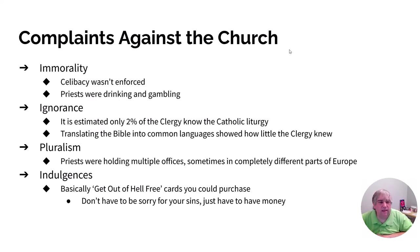What were the biggest complaints against the church? The first is immorality. A Catholic priest is not supposed to live with women, not supposed to have children — supposed to be celibate and chaste. It wasn't happening. There were children of Catholic priests everywhere, and even a couple of popes who had children. Ironically, those popes' children became popes. Priests were drinking and gambling, and instead of doing anything about it, the church just looked the other way.